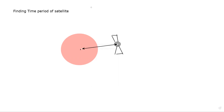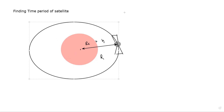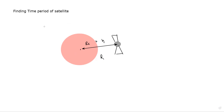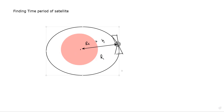This distance between them is represented by r, where r is the radius of Earth plus the height above the surface of the Earth. This satellite is revolving and we want to find the time period — how much time it will take to complete one complete rotation or one revolution.